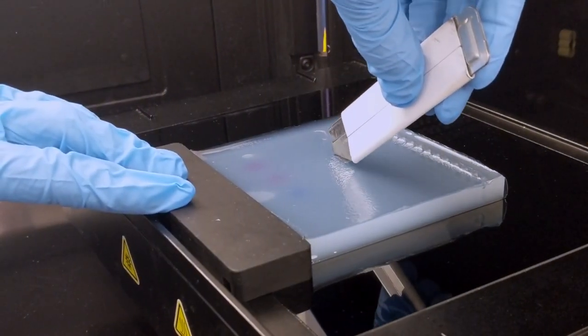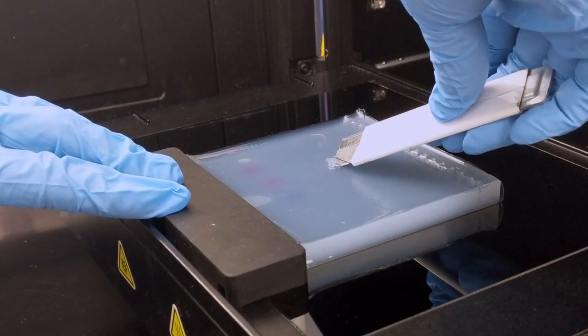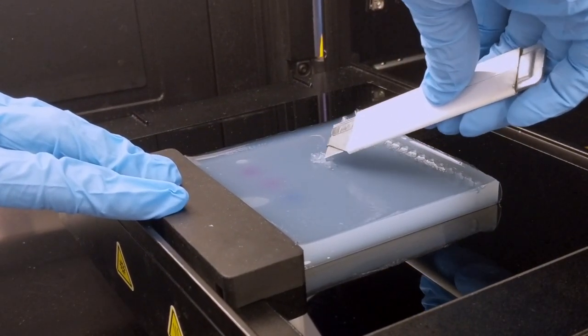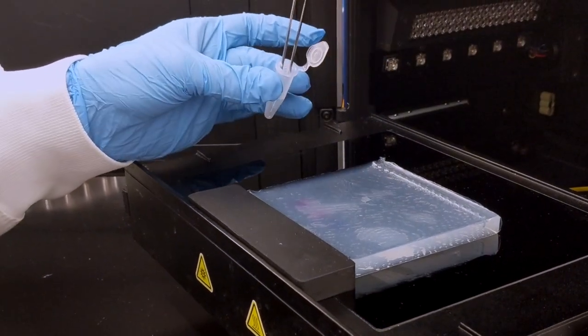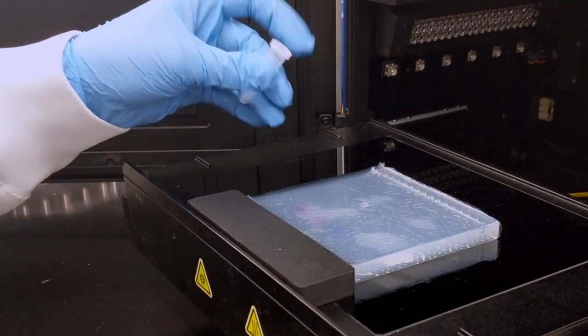When you have successfully cut around the band, separate the extracted piece from the rest of the gel and place it into a microcentrifuge tube. Use sterile tweezers or a sterile pipette tip to carefully maneuver the gel piece into the tube.